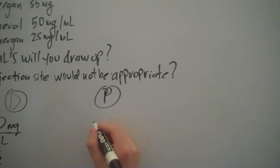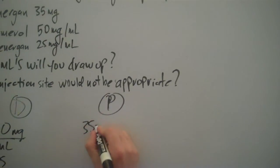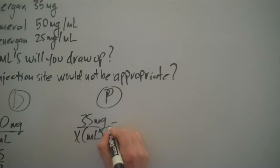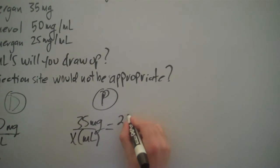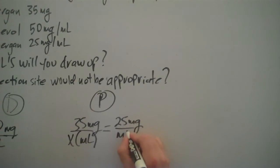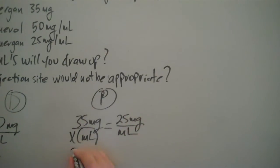We have our order, 35mg over our amount desired in milliliters, equals our supply, 25mg over an ml. Cross-multiply.